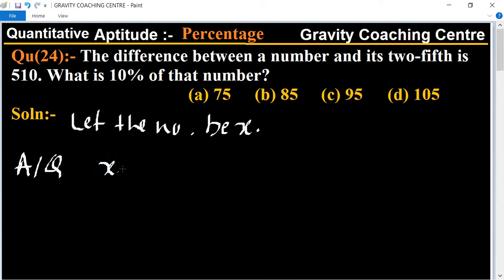So x minus two-fifths x equals 510. Taking the LCM, which is 5, we get 5x minus 2x equals 510.